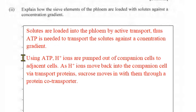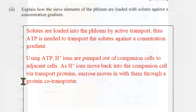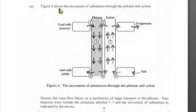As hydrogen ions move back into the companion cell via transport proteins, sucrose moves in with them through a co-transporter protein — this is called symport. Think of it simply: the hydrogen ions open the gate, and sucrose moves in alongside them, getting transported together.